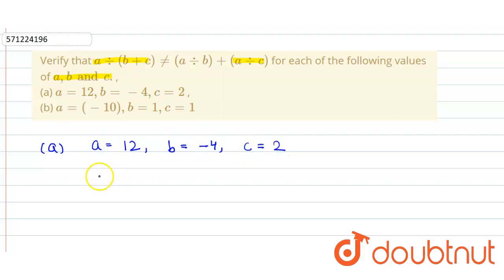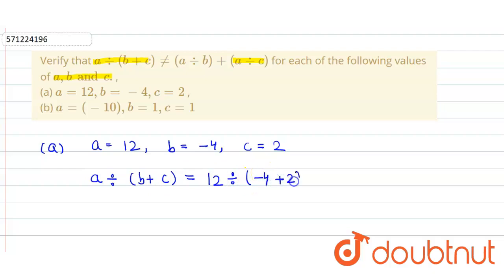Now we try to verify the given expression. First we find out the value of a divided by (b plus c), so that will be equal to 12 divided by (minus 4 plus 2), which equals 12 divided by minus 2, and that will be equal to minus 6.